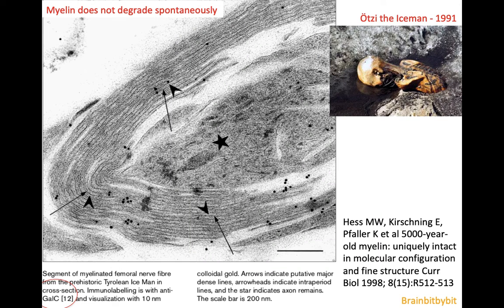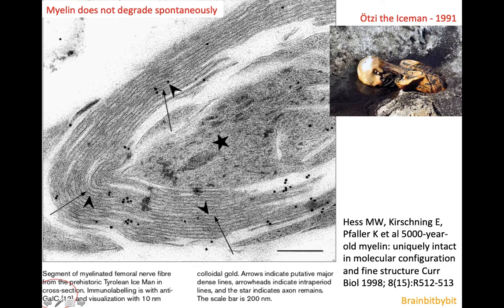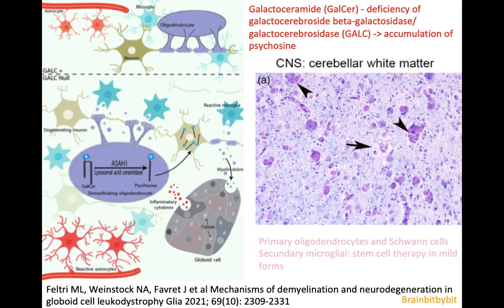Myelin is very stable once it is formed and does not degrade spontaneously, as illustrated by Ötzi's nerve tissue. Ötzi is a natural mummy who lived more than 3,000 years before Christ in the Alps. There was a lot of research done with his body — they found he was lactose intolerant, and they labeled his nerves with anti-galser. You can see that his myelin was still intact after 5,000 years, which is impressive.